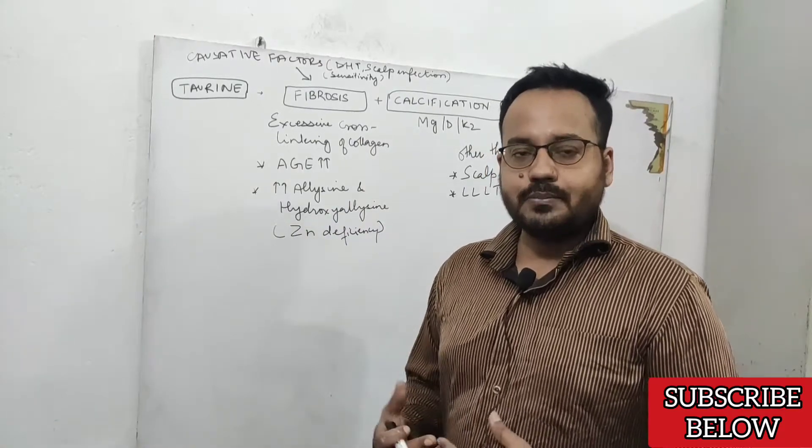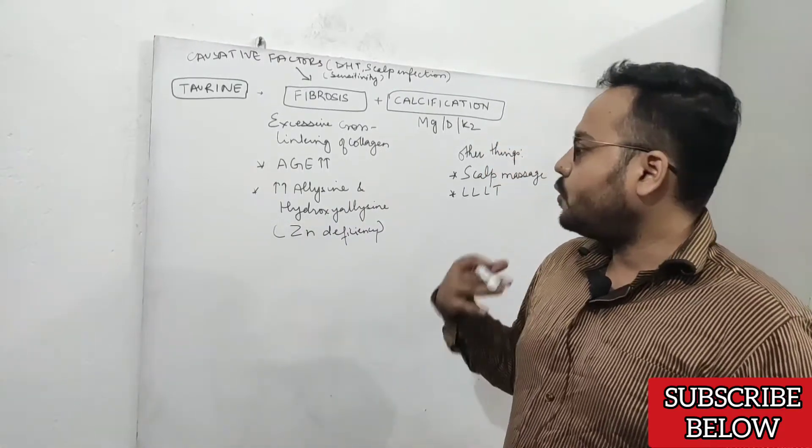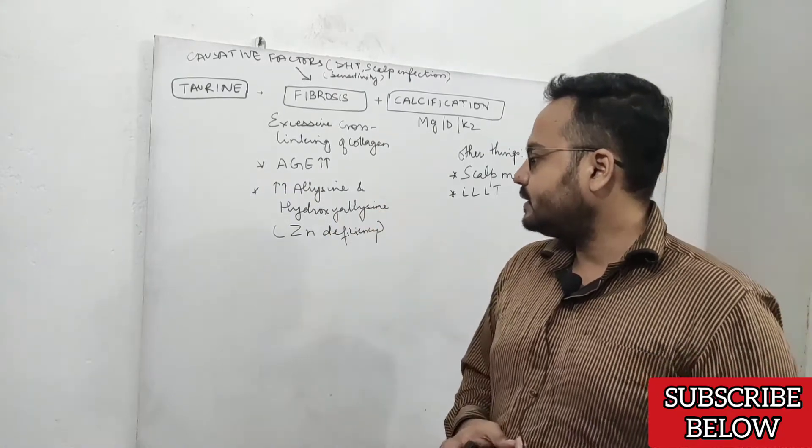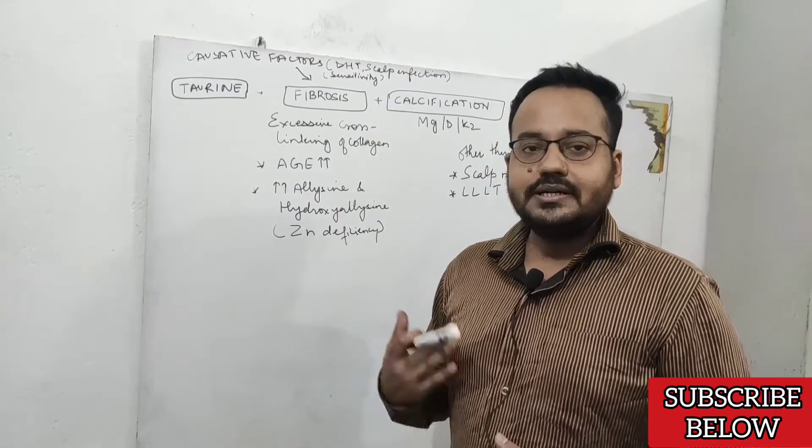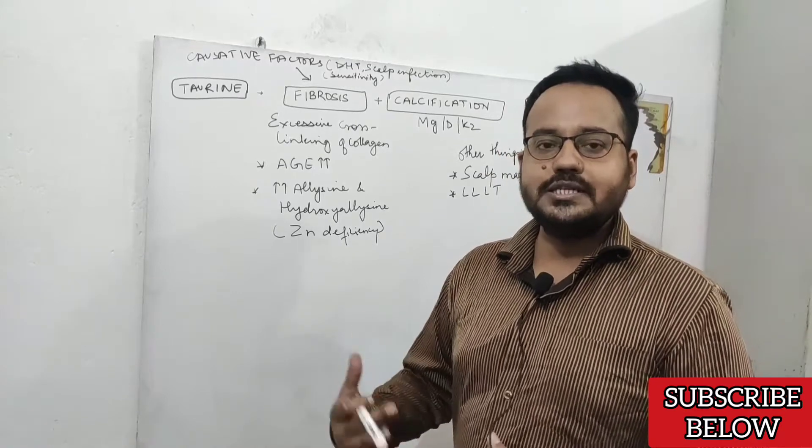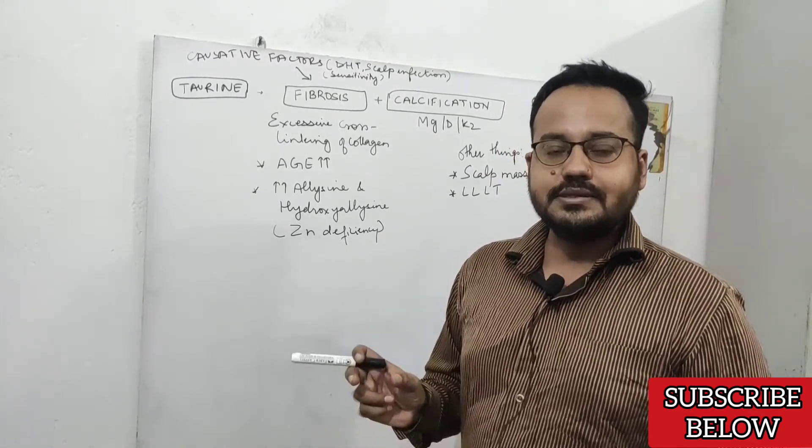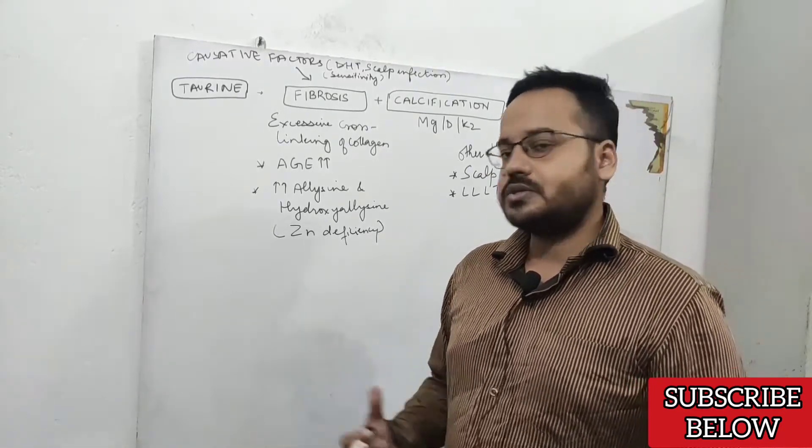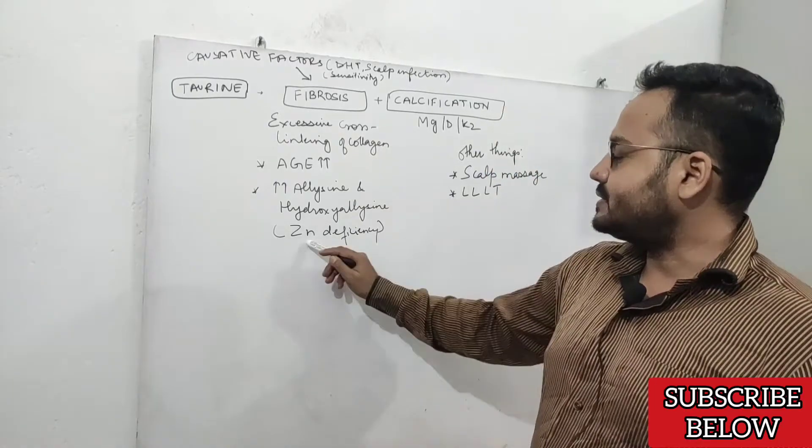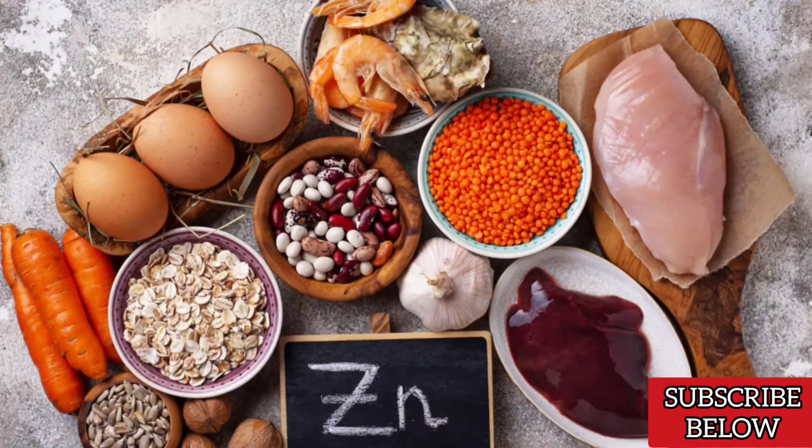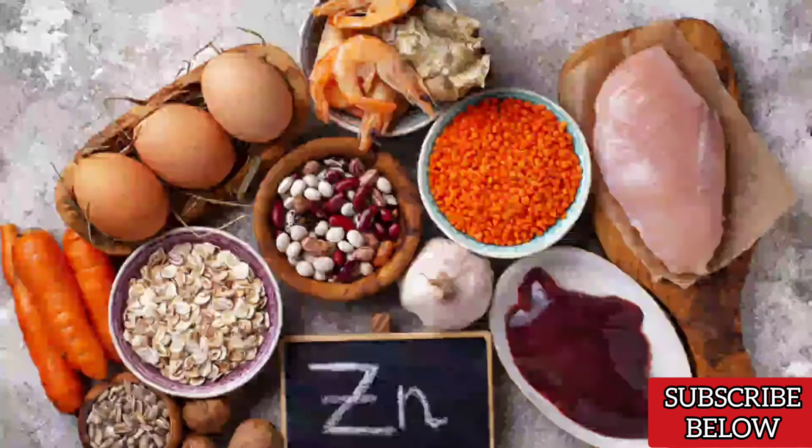When there is overactivity of allysine and hydroxylysine, this can result in fibrosis. Too much collagen production in a single area can result in perifollicular fibrosis, and this is mainly due to zinc deficiency. Make sure you're getting enough zinc in your diet and correct zinc deficiency as soon as possible.